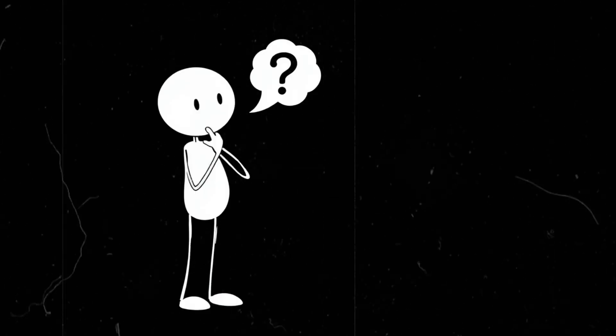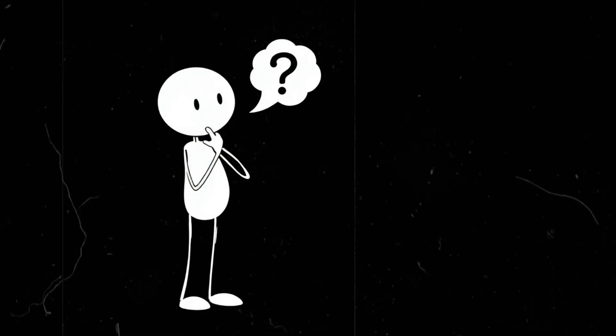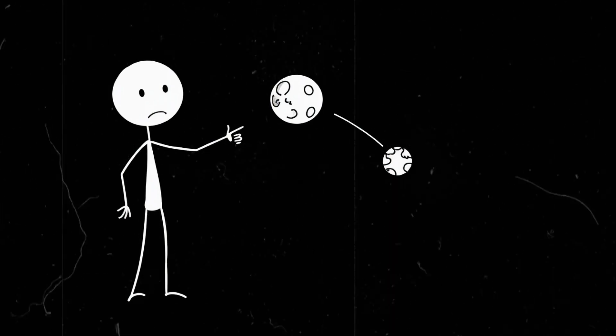Could the moon ever get that close? Now, you might be wondering, could this actually happen? Well, not naturally. In fact, the opposite is happening. The moon is slowly drifting away from Earth by about 3.8 centimeters, 1.5 inches, per year.